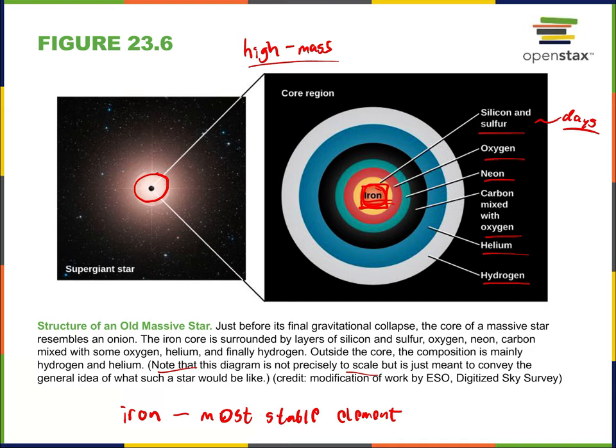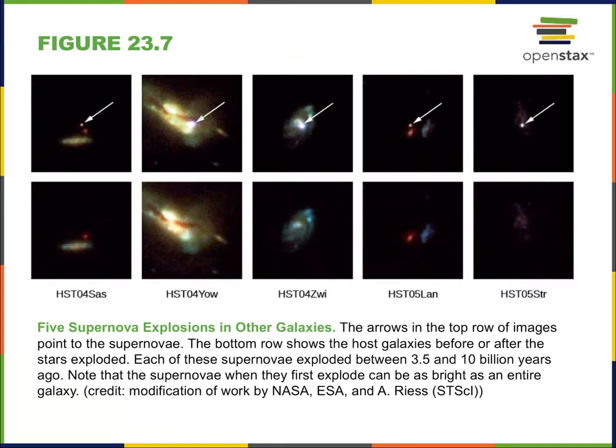Iron is the most stable element and the end of the fusion line for stars. If you started with uranium and just broke apart elements to get energy, you'd eventually end up with iron. In nuclear power plants we stop before that, but iron is truly the end. Likewise with fusion — stars will continue fusing because of the huge inward pressure of gravity, but they'll eventually stop at iron. So iron is the end of the line — this is the onion core of high-mass stars. Now this is a throwback to the material before, because we care about what happens when that star dies.